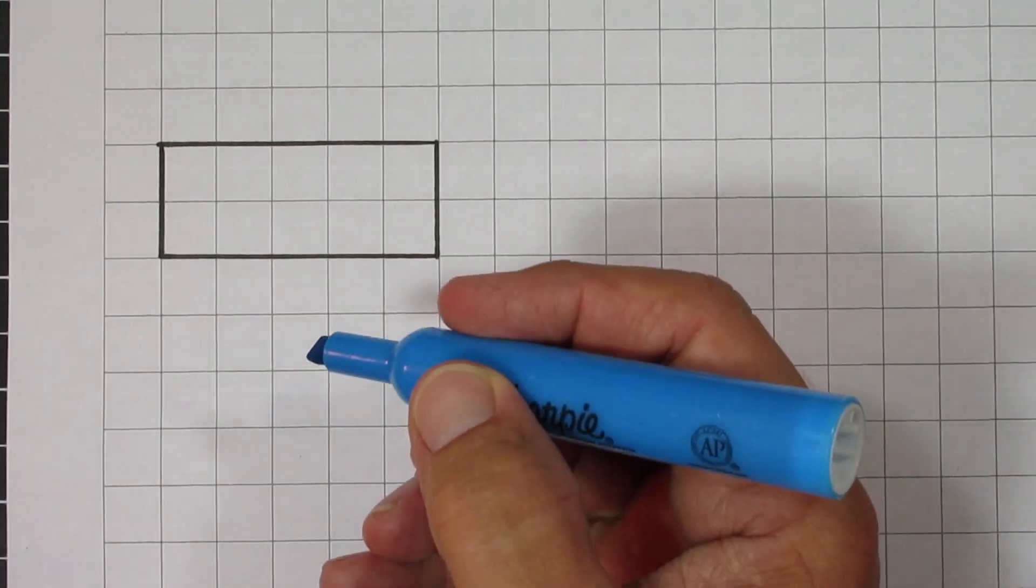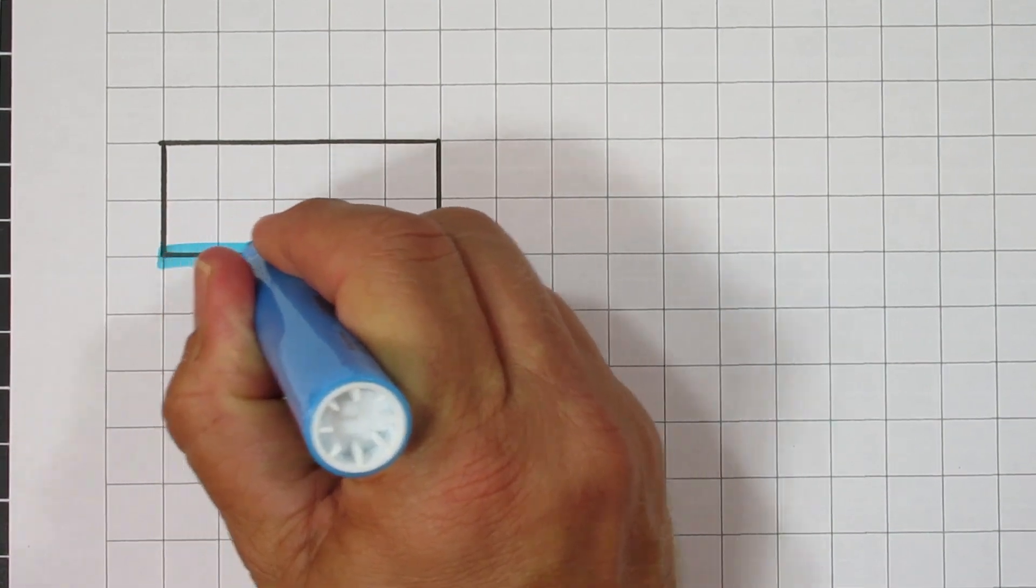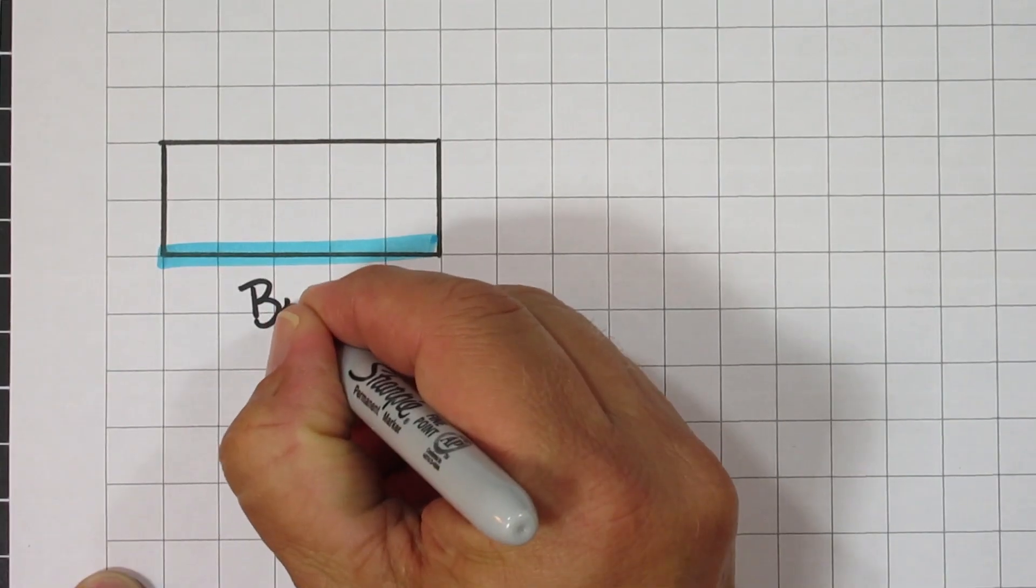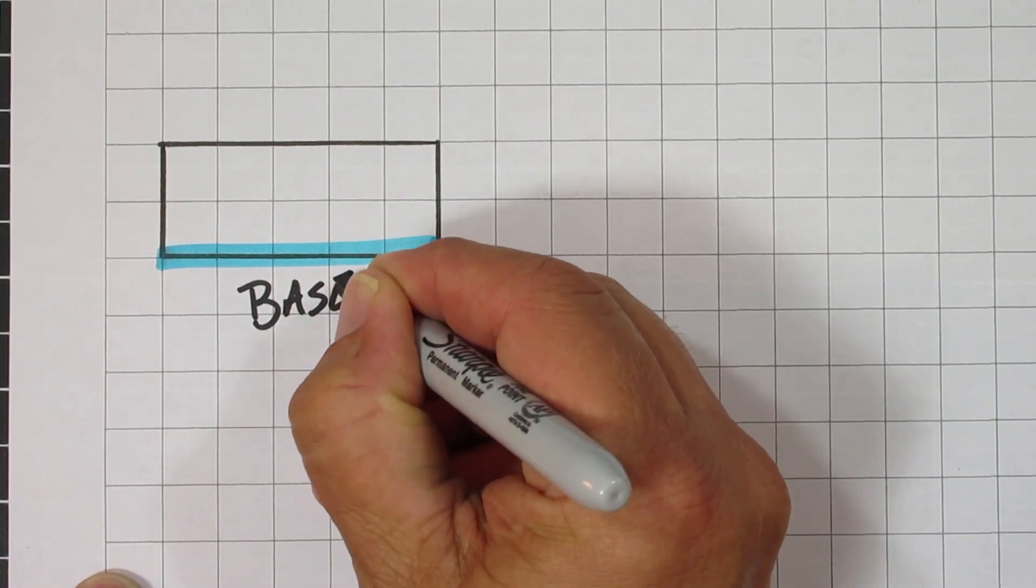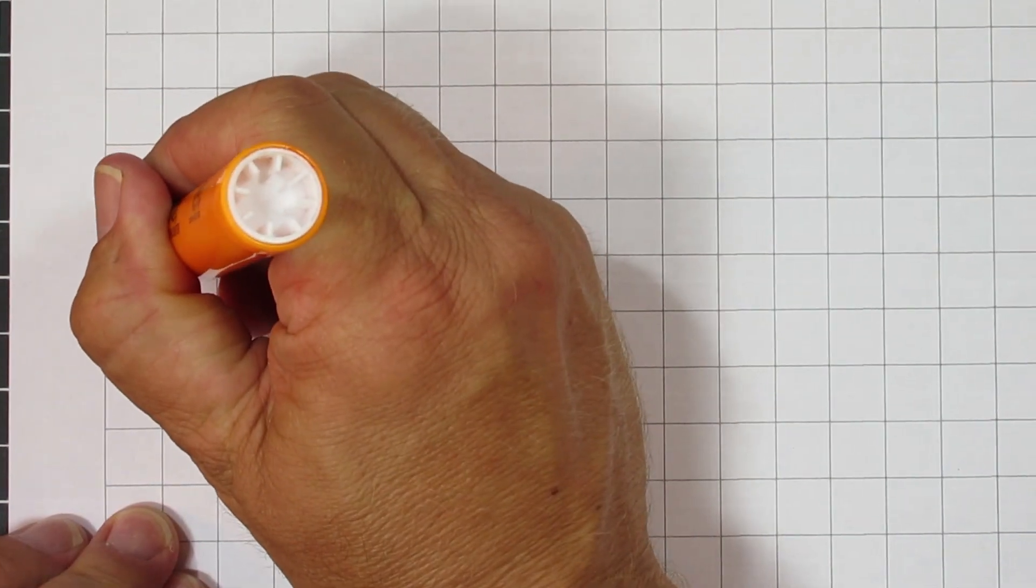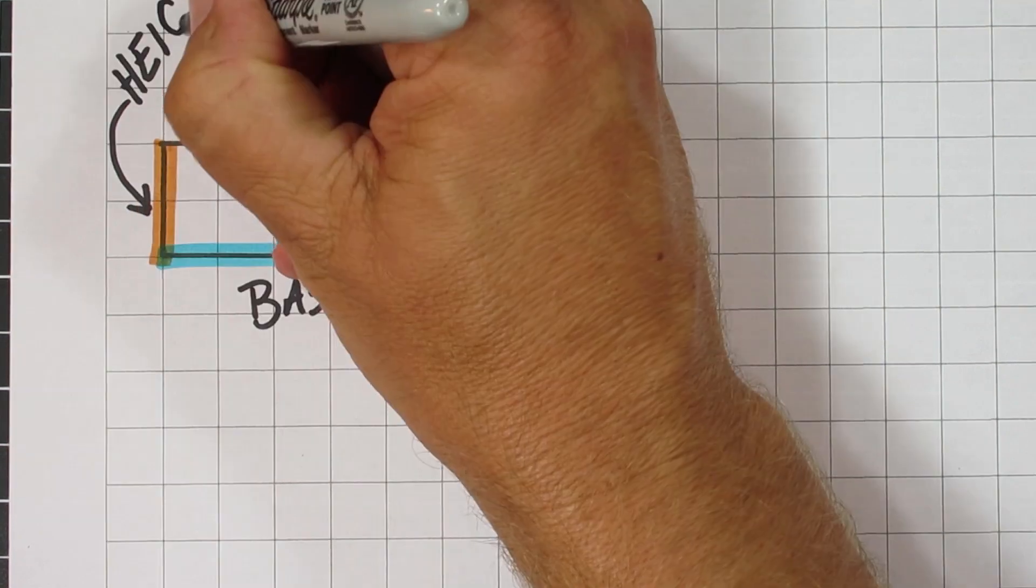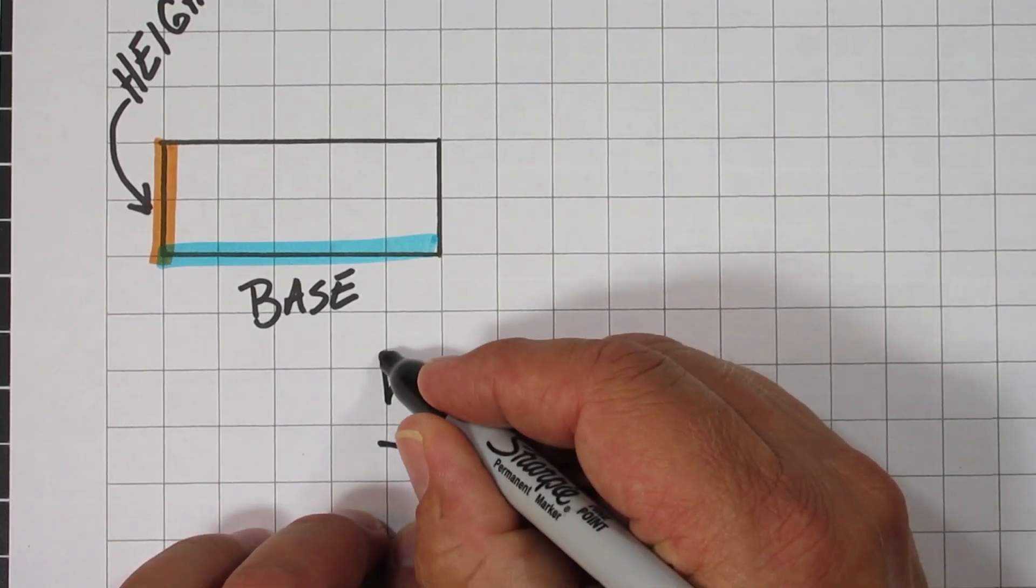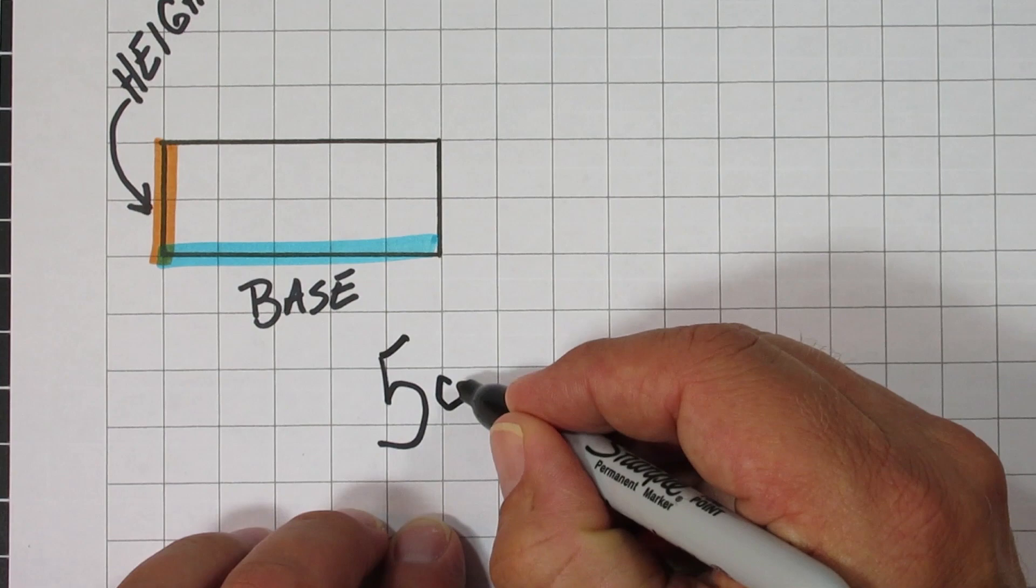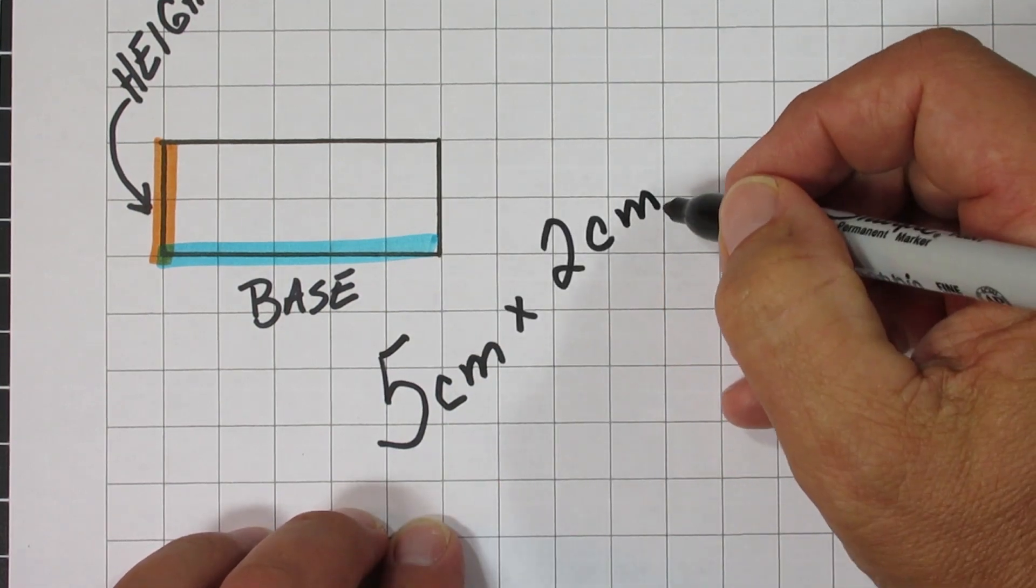The same thing with the rectangle. Trying to find the area of this, we'd find the base, which happens to be 5 centimeters. The height of this happens to be 2 centimeters. So we would take our base of 5 centimeters times our height of 2 centimeters, and we end up with 10 centimeters squared. And we end up with 10 little squares, each one 1 centimeter by 1 centimeter.